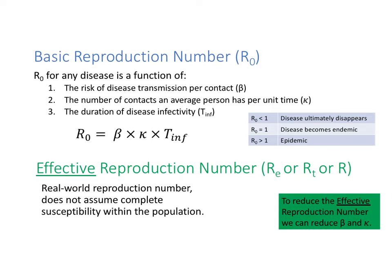In the real world you never have a completely susceptible population — some people will be immune or otherwise not susceptible. So we deal with what's known as the effective reproduction number, sometimes referred to as Re, R-sub-t, or simply R. This does not assume complete susceptibility. We can go back to beta and kappa within the confines of our effective reproduction number — any way to reduce beta or kappa will lead to a reduction in the effective reproduction number.